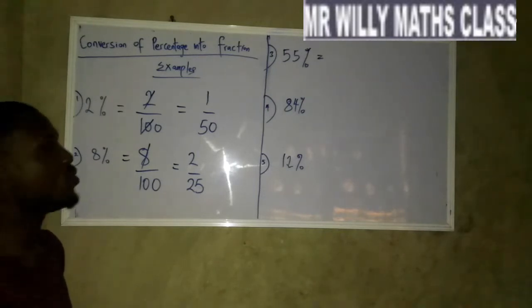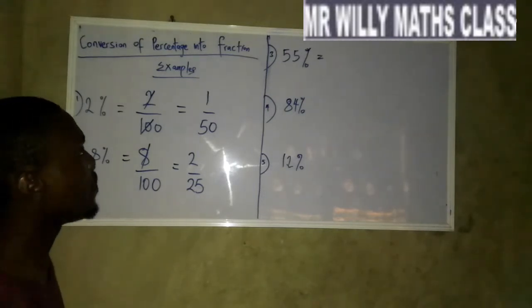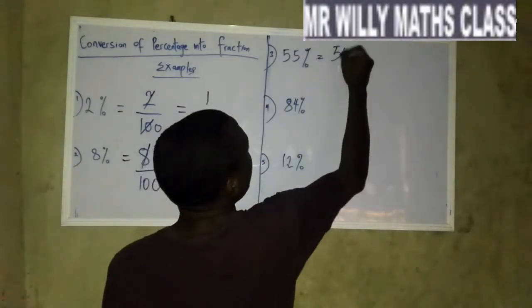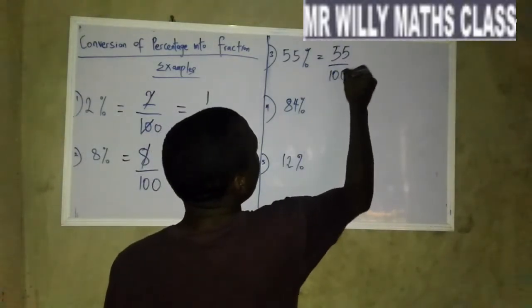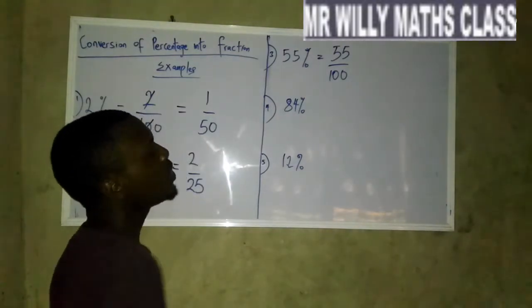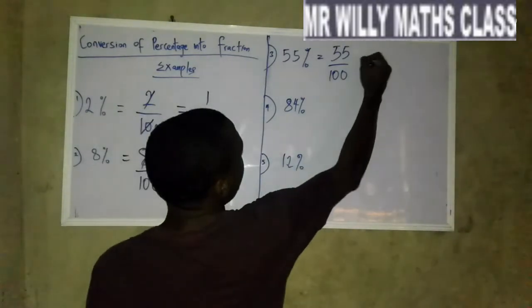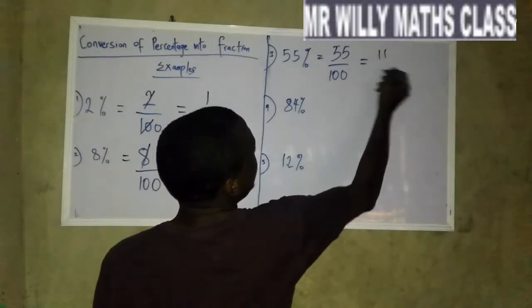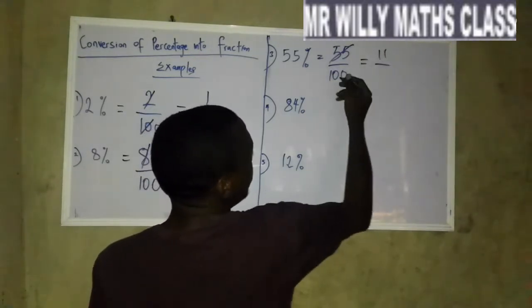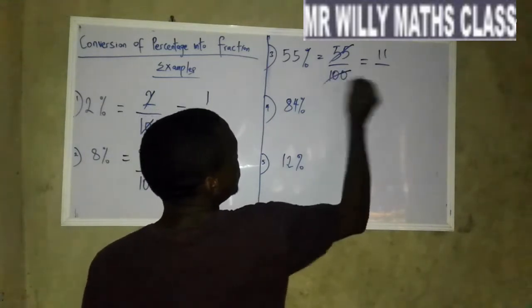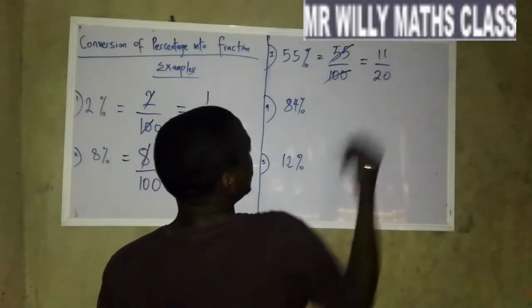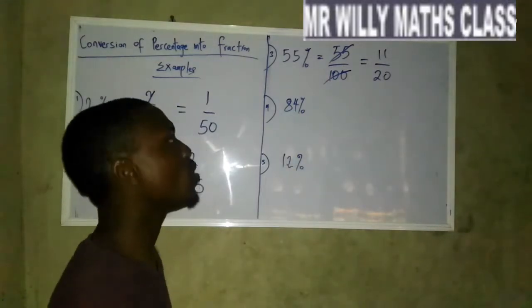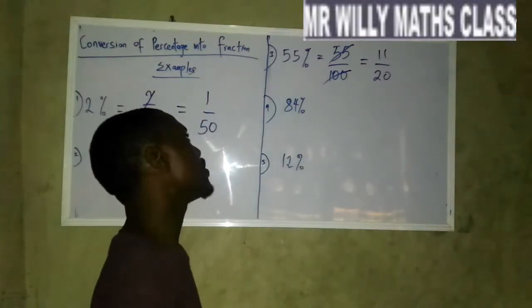Now let's look at 55%. 55% simply means 55 over 100. Then you break it down, you look for a common factor. 5 is a common factor to both 55 and 100. 5 goes into 55 eleven times and 5 into 100 is 20. So 11 over 20. There you can see that we have to stop at this point because there's no common factor for 11 and 20. We move to the next question.